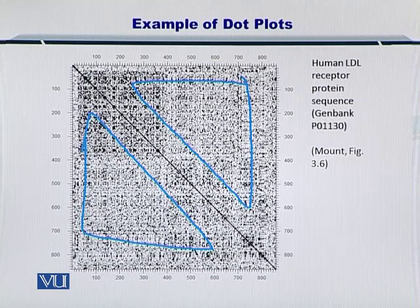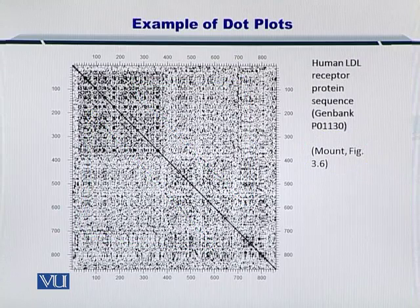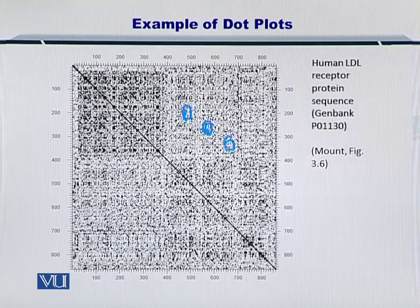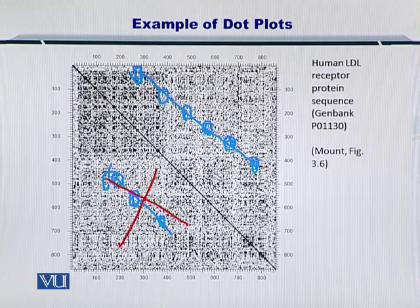I want to introduce another concept that will help you reduce this noise. This figure is already provided in your textbook and you can refer to it. What if we say we will only consider those diagonals that are connected to at least six other dots? Any diagonal with fewer than six dots will be left out. So if you have a diagonal of six dots like the blue dots shown here, we will consider it. But if only two or three dots are connected, we reject them because the threshold to select a diagonal is six dots.